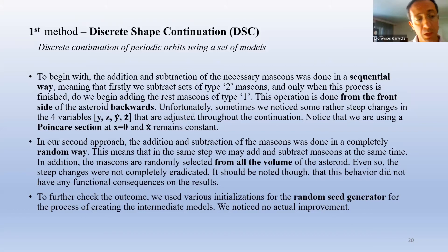Unfortunately, sometimes we noticed some rather steep changes in the four variables that were adjusted throughout the continuation. In our second approach, however, the addition and subtraction of the mass cons was done in a completely random way, but even so, the steep changes were not completely eradicated. It should be noted, though, that this behavior didn't have any functional consequences on the results.